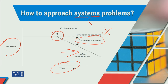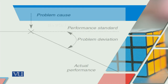Obviously humari koishish yehi hogi ke hum apne actual performance ko increase ker ker ke kum az kum performance standards ke mutabiq apne outcome ko lekar aasakein, aur us ko performance standards tak lane ke liye no doubt hume circumstances, limited resources, conditions and constraints in tamam ko face kerna hoga.